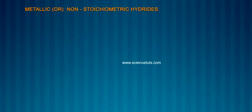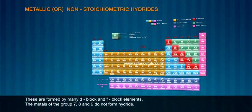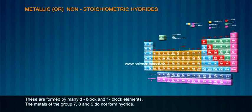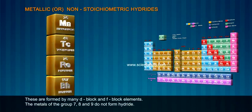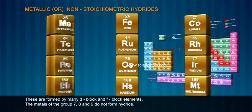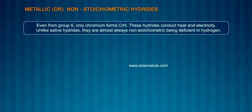Metallic or non-stoichiometric hydrides are formed by many d-block and f-block elements. The metals of groups 7, 8, and 9 do not form hydrides. Even from group 6, only chromium forms CrH. These hydrides conduct heat and electricity.